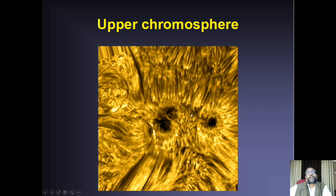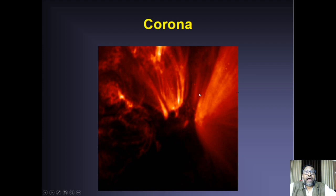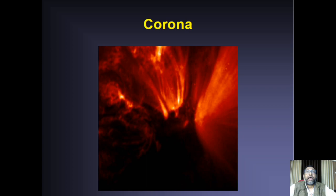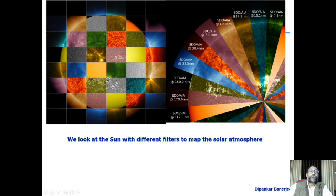Going further up, these images are taken in X-rays. As temperature increases, an object emits in shorter and shorter wavelengths. The earlier images were taken in visible wavelength, then ultraviolet, and now we are going into X-rays. The wavelengths are even shorter, and you can see the sunspots look very different. We look at the sun with different filters to map the solar atmosphere.